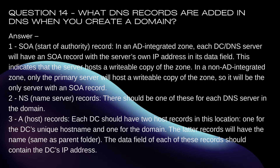Question 14: What DNS records are added in DNS when you create a domain? 1. SOA (Start of Authority) record: In an AD-integrated zone, each DC/DNS server will have an SOA record with the server's own IP address in its data field. This indicates that the server hosts a writable copy of the zone. In a non-AD-integrated zone, only the primary server will host the writable copy, so it will be the only server with an SOA record. 2. NS (Name Server) records: There should be one of these for each DNS server in the domain.